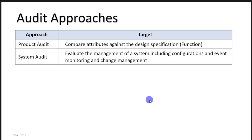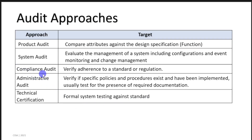We also have a system audit, where we review system configuration parameters. There is also a compliance audit, where we verify that our company or operation adheres to a standard or regulation — for example, when trying to certify an organization against an ISO certification or the BCI standard. Similarly, technical certifications like TÜV, which is related to quality and manufacturing, represent another audit approach. There is also an administrative audit. Please don't confuse these approaches with internal and external or independent audits — these are just the different audit approaches or types that a CISA aspirant needs to be aware of.